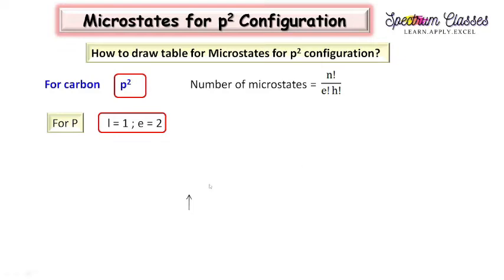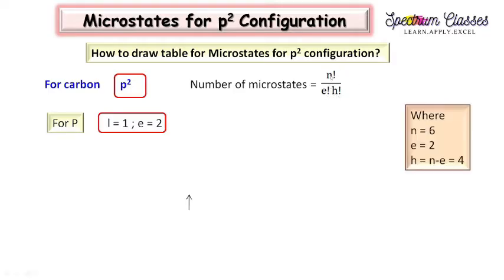First, we are going to calculate the number of microstates possible for the P2 configuration. The formula to calculate the number of microstates is factorial N divided by factorial E times factorial H. Here, factorial N is the maximum occupancy of that orbital. For the P orbital, the maximum is 6 electrons, and E is the number of electrons present, so E equals 2.